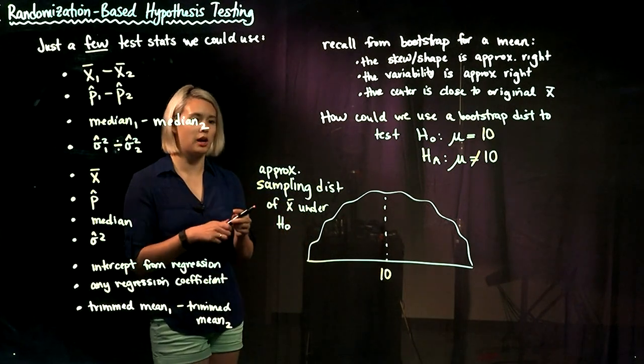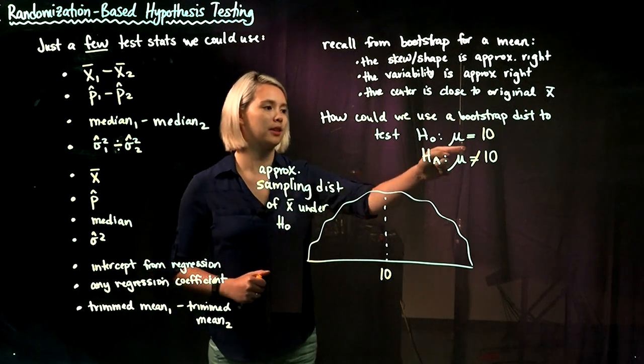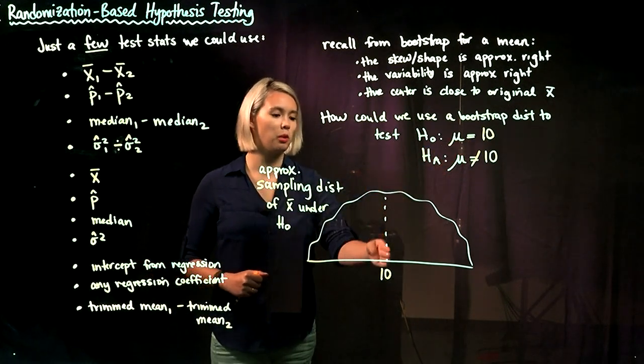So if this is the approximate sampling distribution for the sample mean under the null hypothesis, the null hypothesis says that the mean is equal to 10, so we want it to be centered at 10.